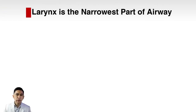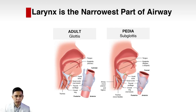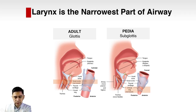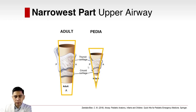The larynx is the narrowest part of the airway. The airway goes from the nose to the nasal cavity, oral cavity, hypopharynx, and larynx; below the larynx is the lower airway. In adults, the narrowest part of the upper airway is the glottis. In pediatric patients, the narrowest part is the subglottis near the cricoid area.